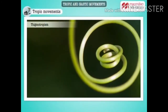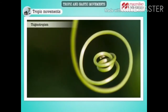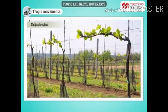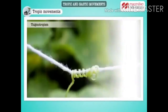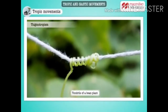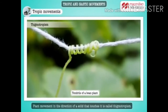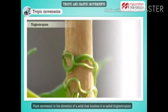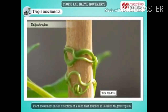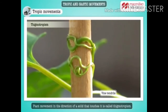These vine stems are actually tendrils. Tendrils move in the direction of a solid object that they happen to come in contact with. Plant growth movement in the direction of a solid that touches it is called thigmotropism.